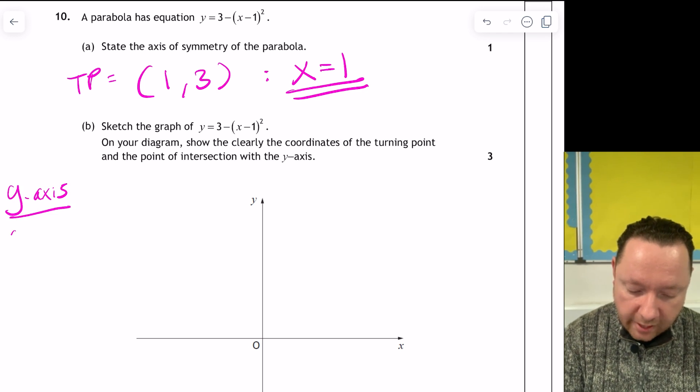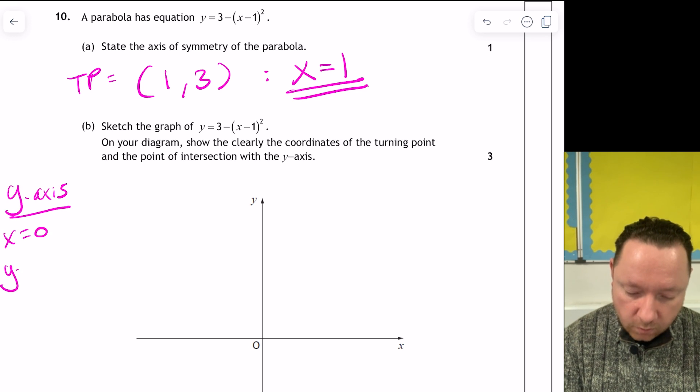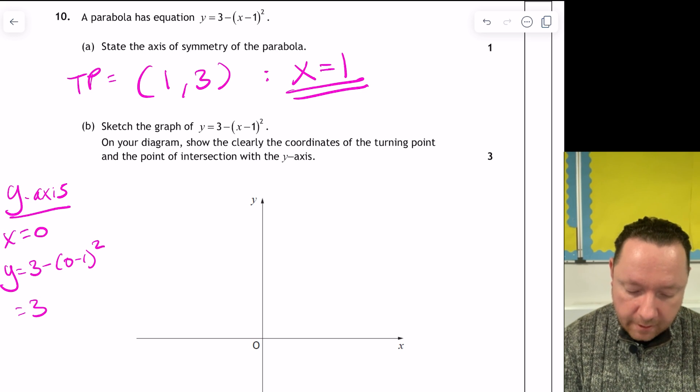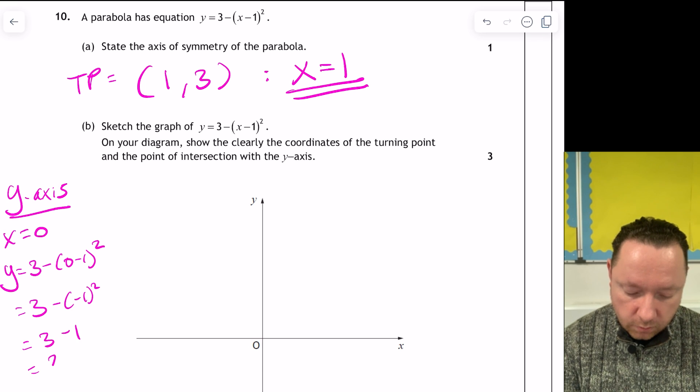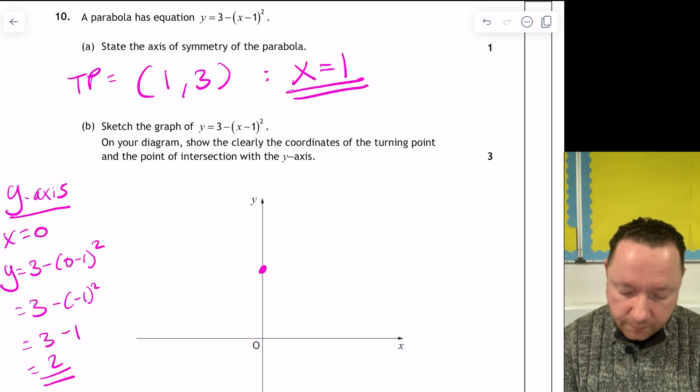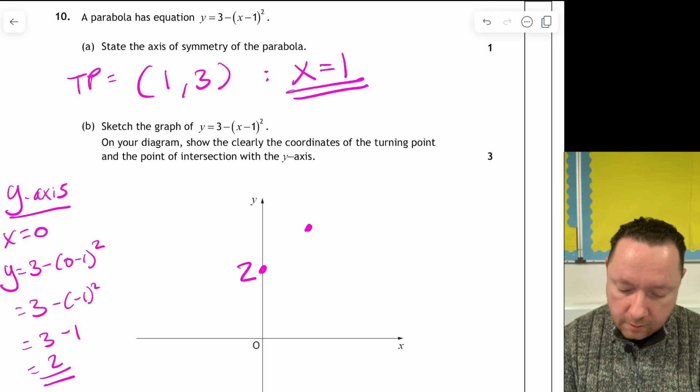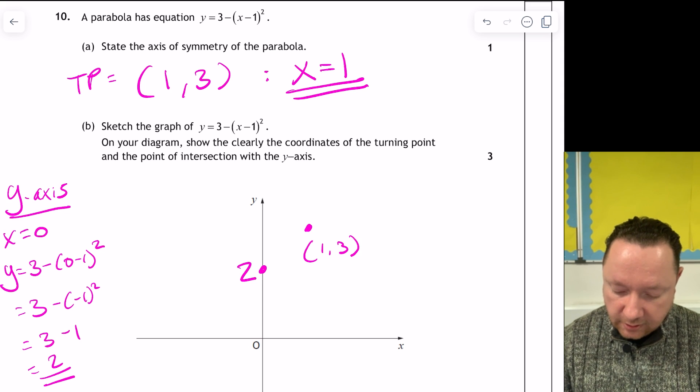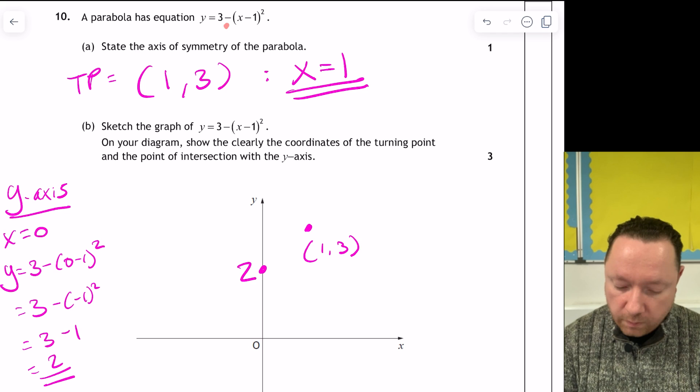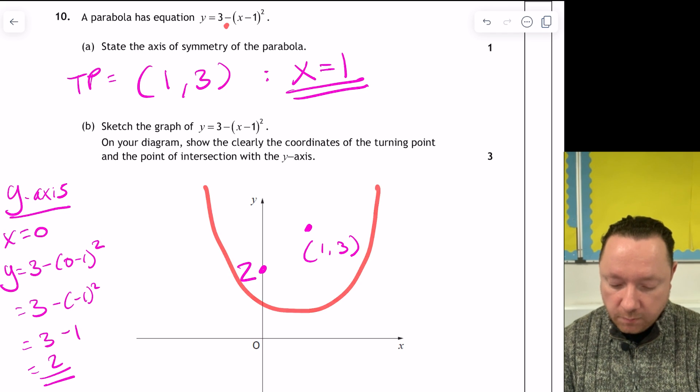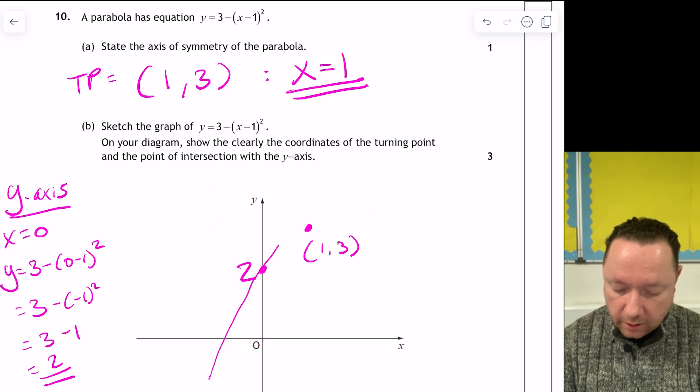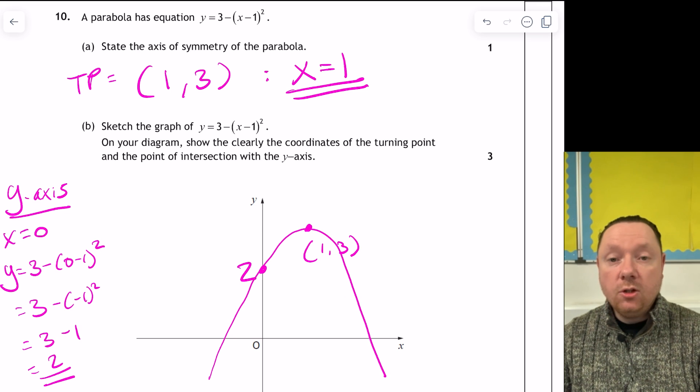Y-axis. It's always just the other letter. It's when x equals 0. So y equals 3 minus 0 minus 1 squared. That's 3 minus minus 1 squared. That's 3 minus 1, which is 2. So we've got 2 somewhere here. And then along 1, up 3. And this is a different one for a change. Since the minus is in front of the bracket, it's not sloping the normal way down. It's actually upside down. So it goes like this.